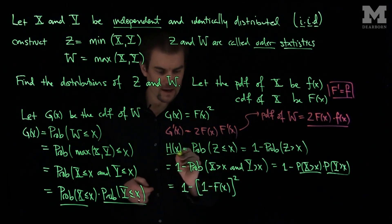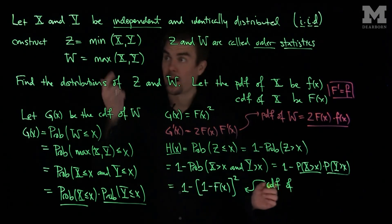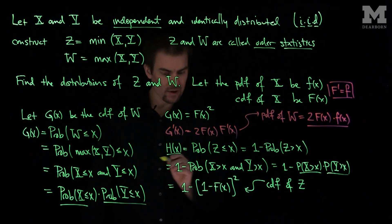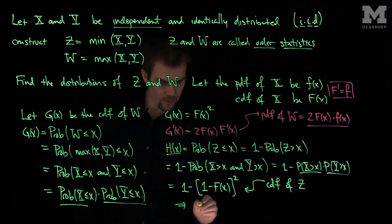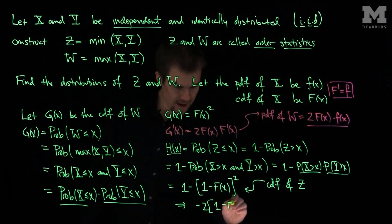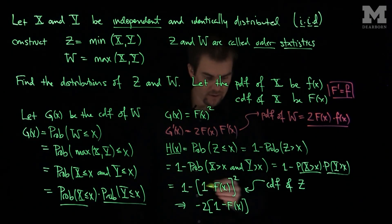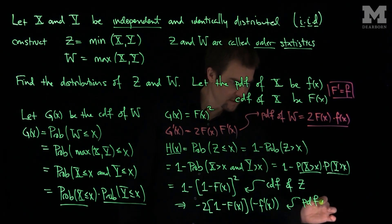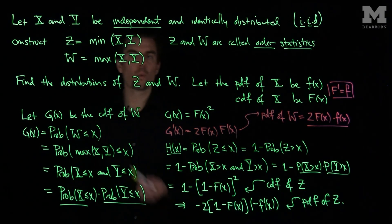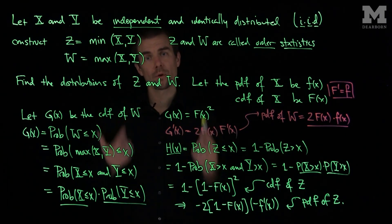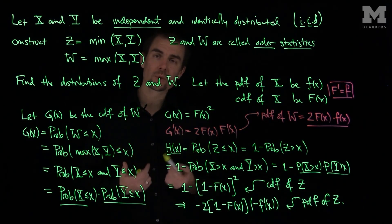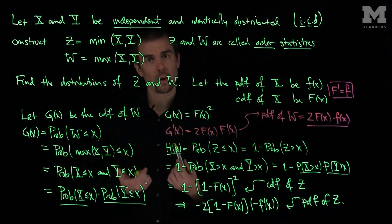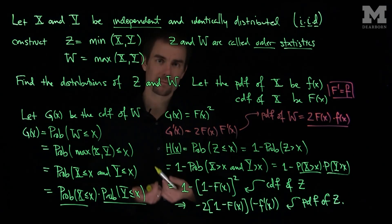So this formula for h of x is the cdf of z. To find the pdf of z, we take the derivative of this. The one will go away, we'll get a negative two and then a one minus F of x times the derivative of the inside, which is going to be a negative F prime of x. So this is the pdf of z. When we're computing the pdfs of order statistics — either the minimum or the maximum of random variables — we want to write either the cumulative distribution function or the survival function of x and y and compute the corresponding probabilities using the independence of the random variables. Thank you very much.